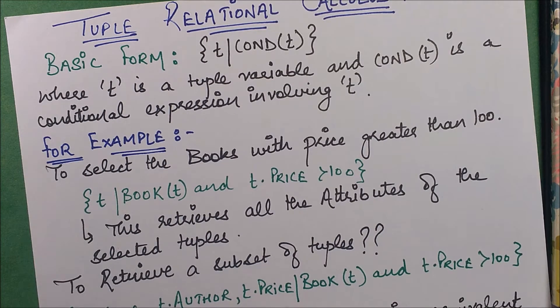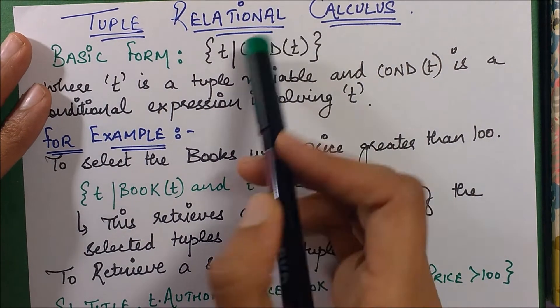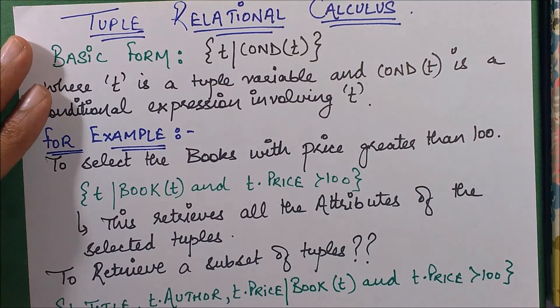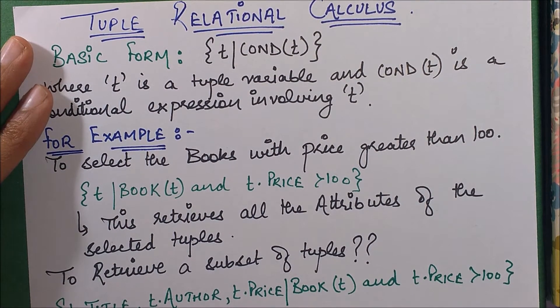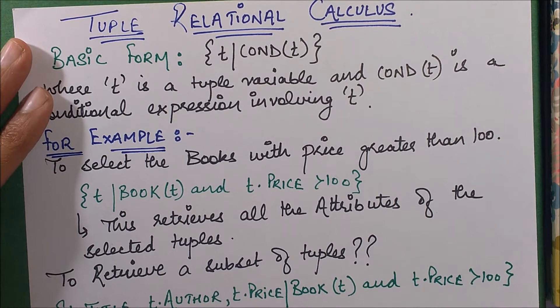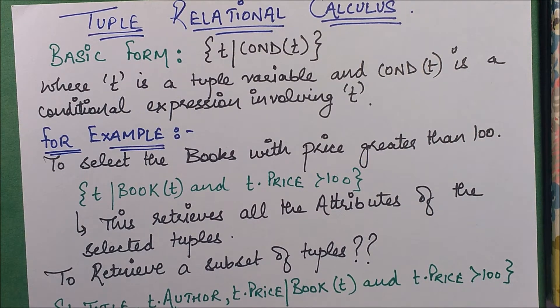The basic form is this: we have t as a tuple. What are tuples? Tuples are the rows in your table. The table is called the relation in your database, so the rows are the tuples.